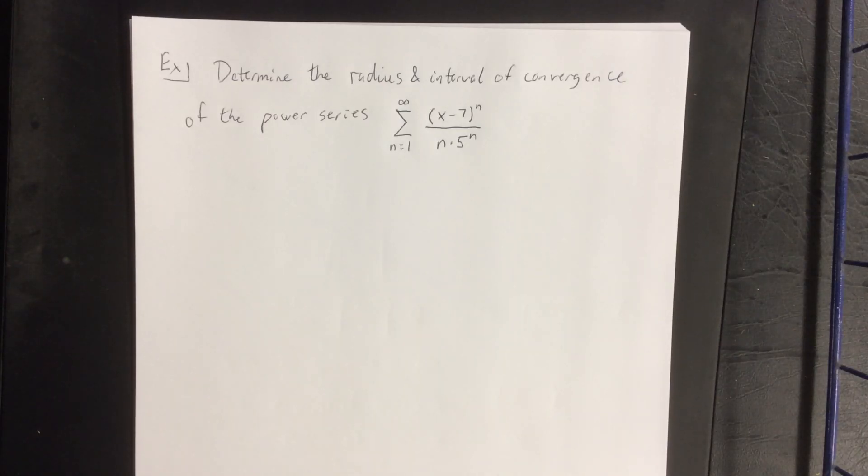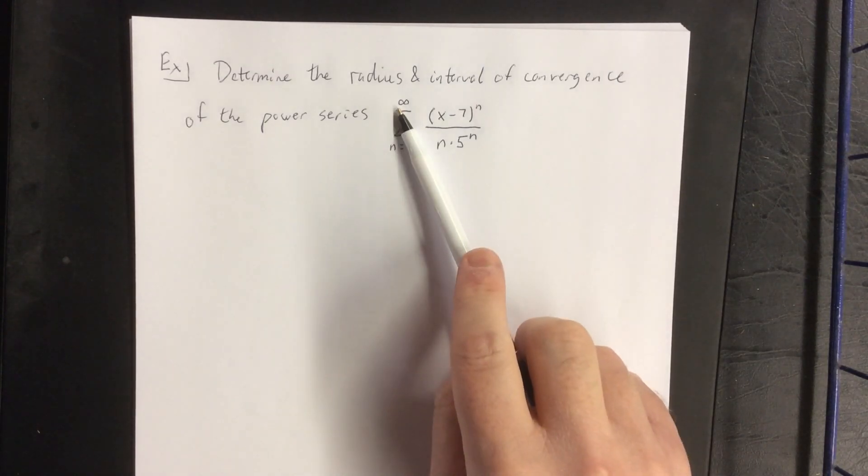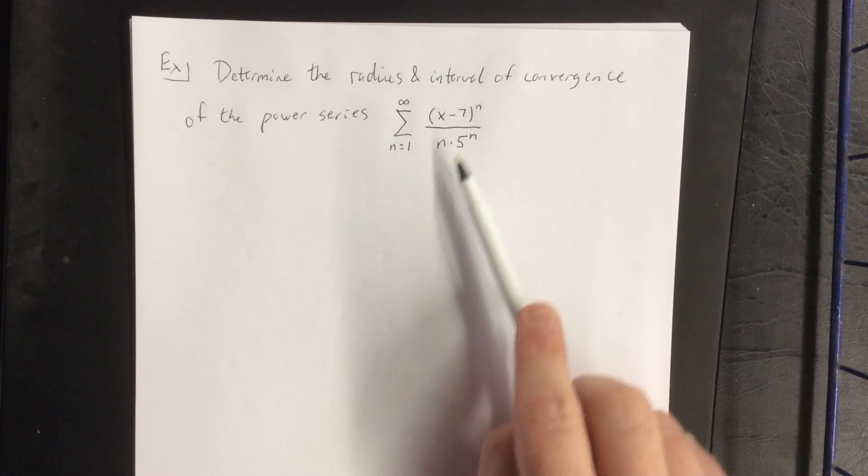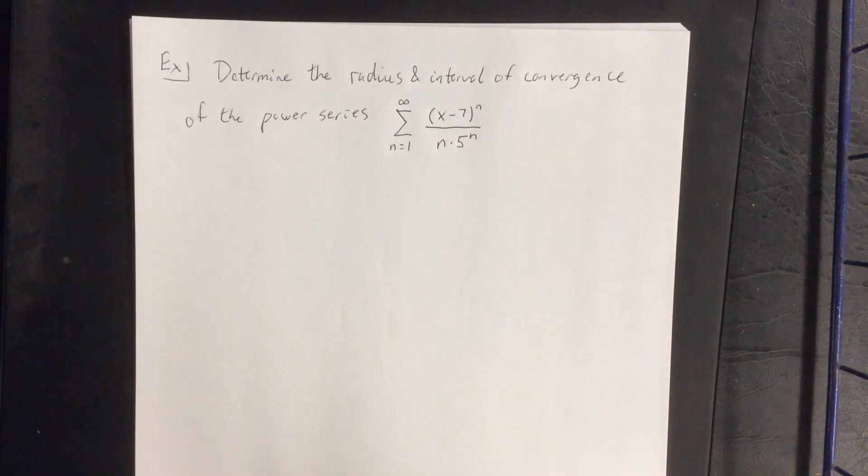In this example, we're going to determine the radius and the interval of convergence for the following power series. We have the sum from n equals 1 to infinity of x minus 7 raised to the nth power over n times 5 raised to the nth power.